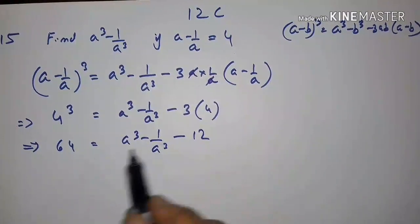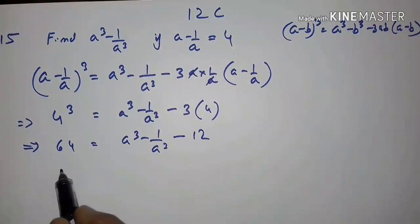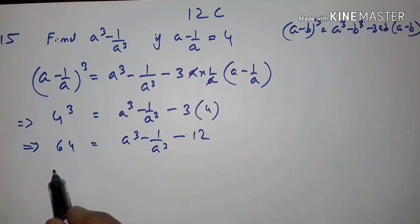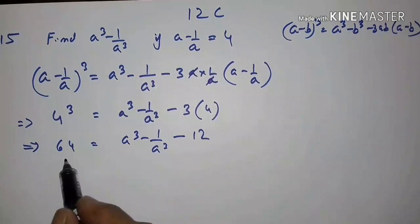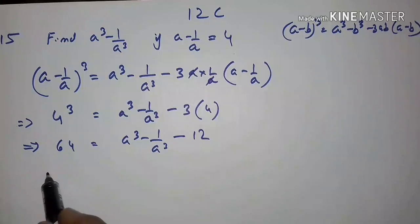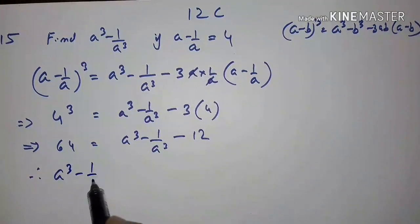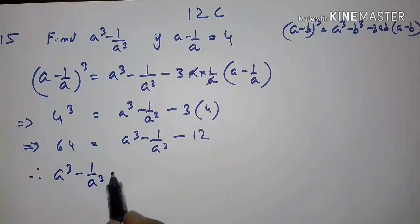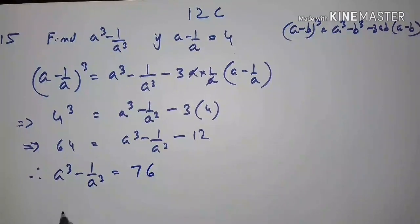Minus 12 comes to the left and becomes plus 12. So 64 plus 12 equals 76. Therefore, a cubed minus 1 upon a cubed is equal to 76.